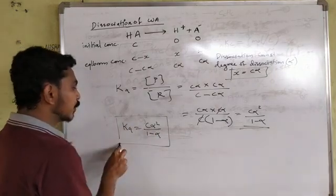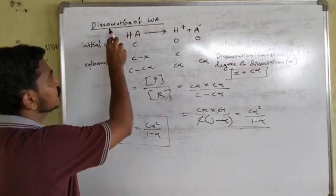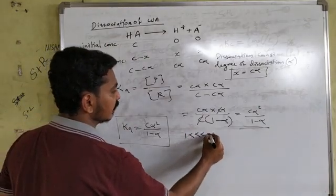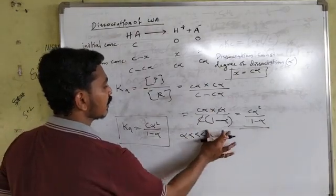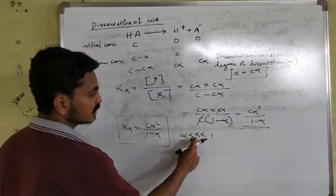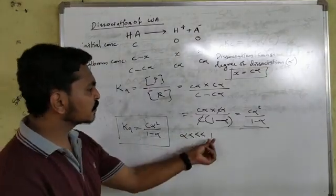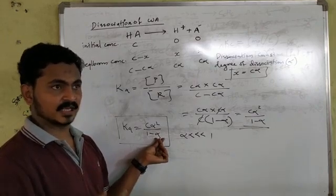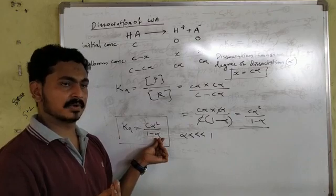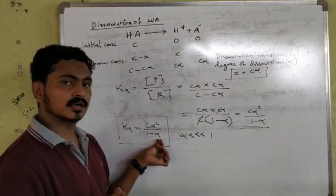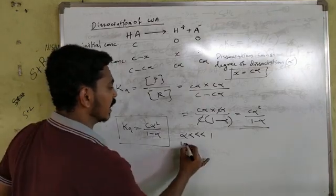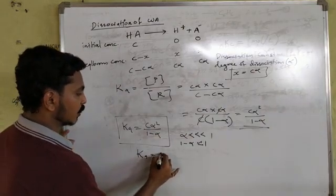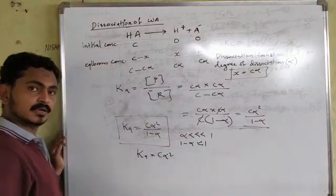Ka equals C alpha squared divided by one minus alpha. This is the equation to calculate the equilibrium constant of dissociation of a weak acid. Now, suppose alpha is very much lesser than 1, then one minus alpha is approximately equal to 1. So we can simplify the denominator term.